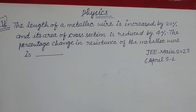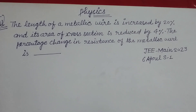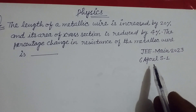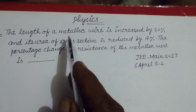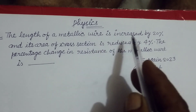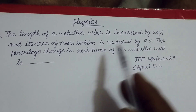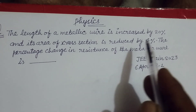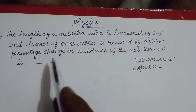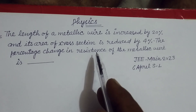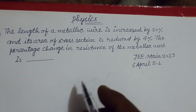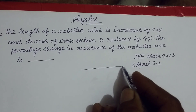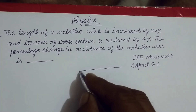Hello students, welcome to this YouTube channel. This question is from JEE Mains 2023, 6 April paper. The problem states: the length of a metallic wire is increased by 20% and its area of cross section is reduced by 4%. The percentage change in resistance of the metallic wire is?